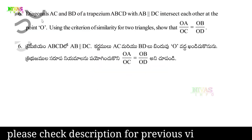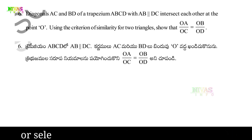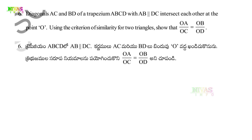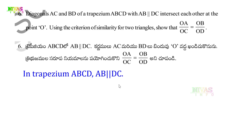Question number 6. Diagonals AC and BD of trapezium ABCD with AB parallel to DC intersect each other at the point O. Using the criterion of similarity for two triangles, show that OA by OC is equal to OB by OD. I have a trapezium ABCD where AB is parallel to DC. So I have a trapezium with two parallel sides, and here AB is parallel to DC.